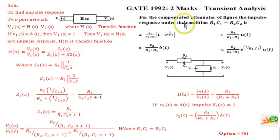We will read out the problem first. It says that for the compensated attenuator of the figure, the impulse response under the condition R1C1 equals R2C2 is given, and there are four options provided here.